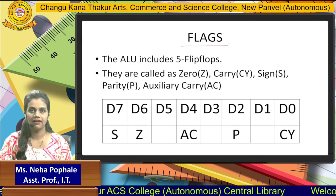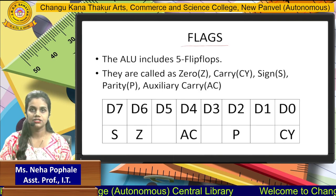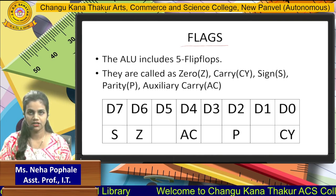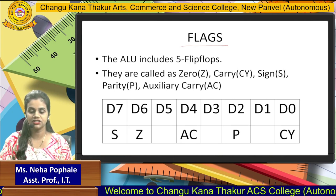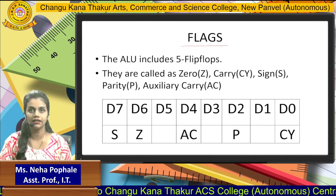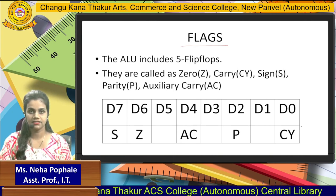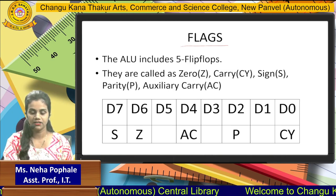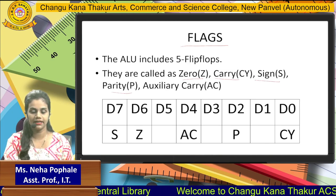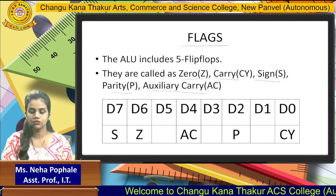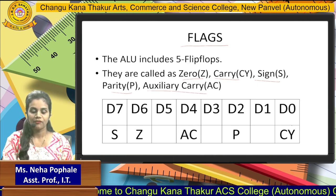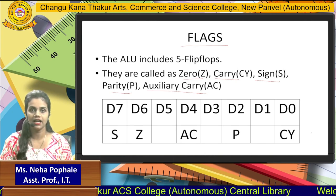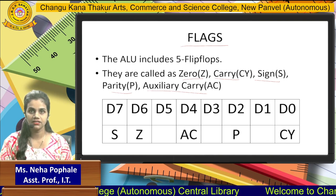The next register we have is the flag register. The flag register shows the status of the operation that you are going to perform. After every instruction is executed, the status is changed, so observe the flag register after the execution of every instruction. It basically has 5 flags: zero flag, carry flag, sign flag, parity flag, and auxiliary carry flag. It is 8-bit as shown in the image, but all 8 bits are not used — only 5 bits are used and the remaining 3 are unused. This 8-bit structure will be discussed in the next video.